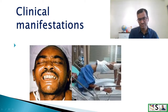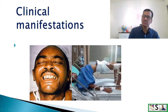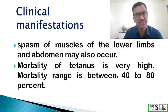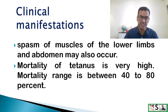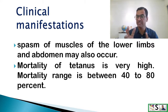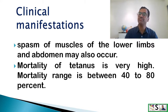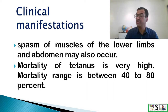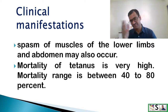Tetanus is a very serious condition. The spasm of other muscles may also occur, including the lower limbs and abdomen, and it is very painful. The mortality of tetanus is very high, ranging between 40 to even 80 percent in some cases.